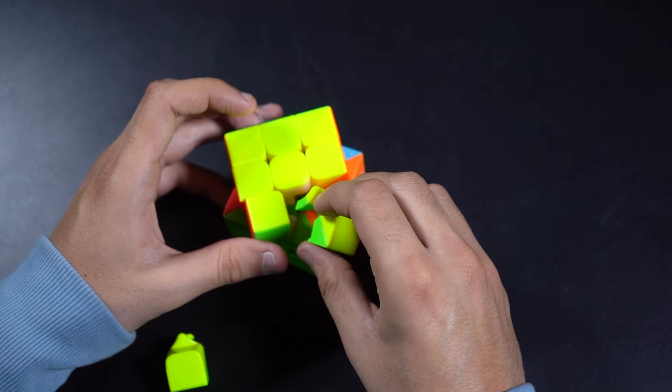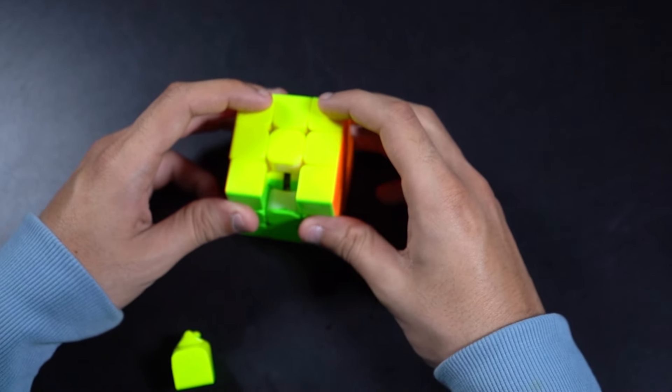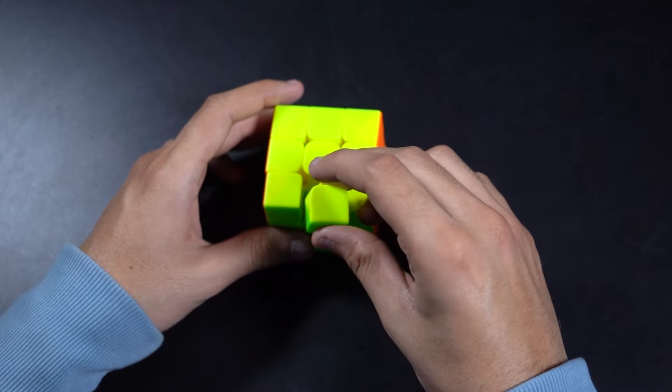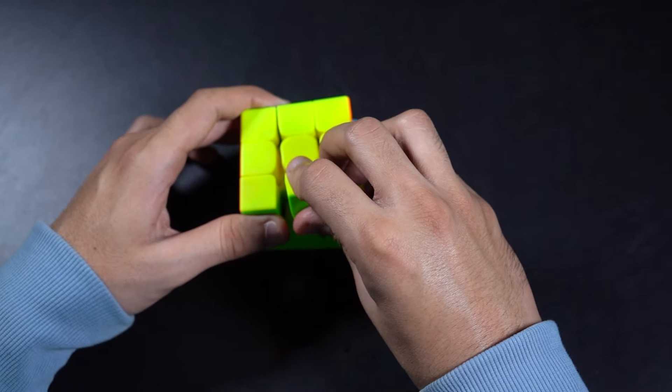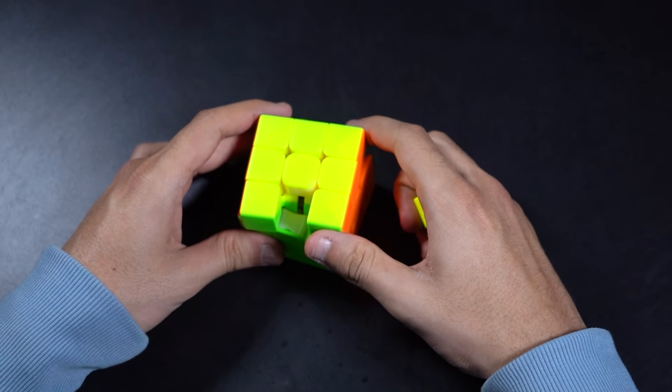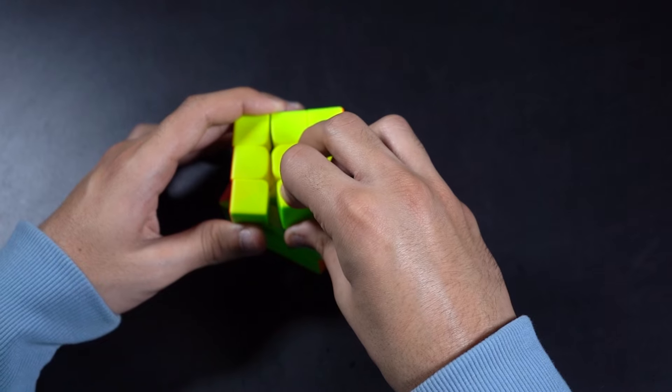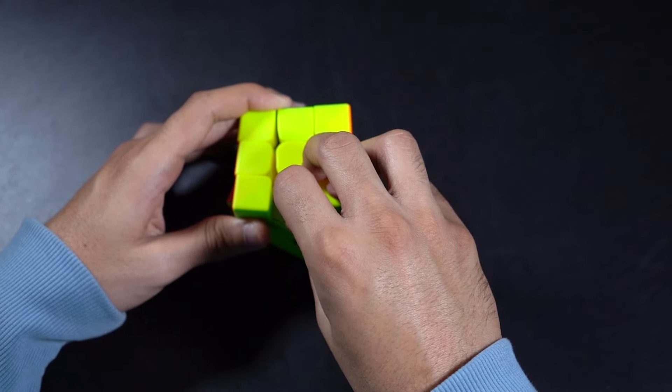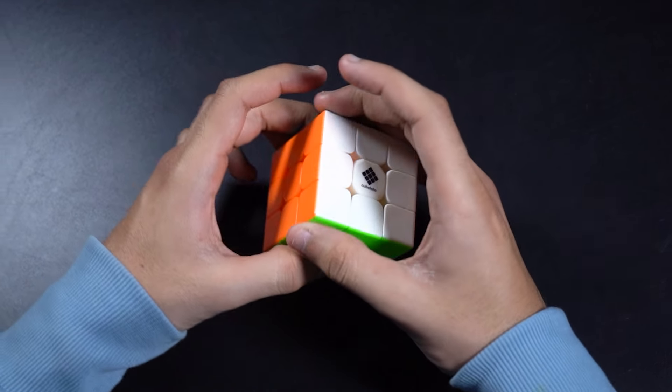For the last pieces you might have some difficulty putting them in. So yes, this goes over here. And it might be a bit difficult to slide this in over here. So what we do is we turn this 45 degrees. And now when we do that, it easily slides in. And now we have a completely assembled 3x3.